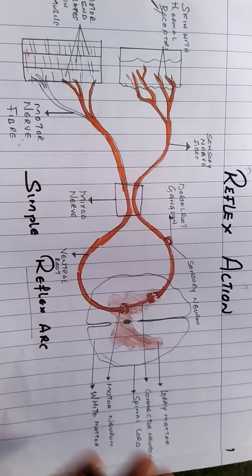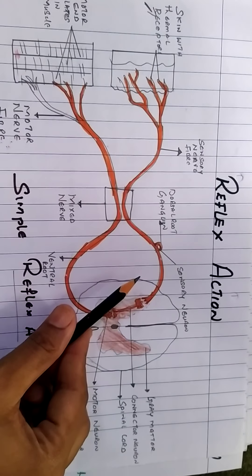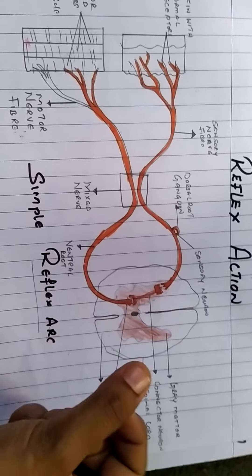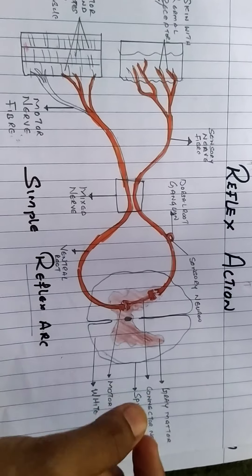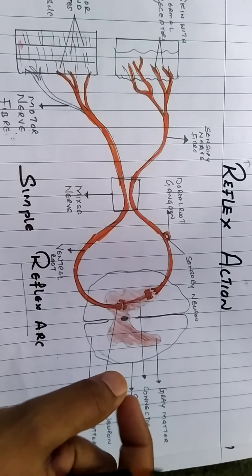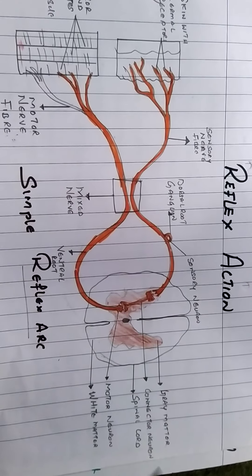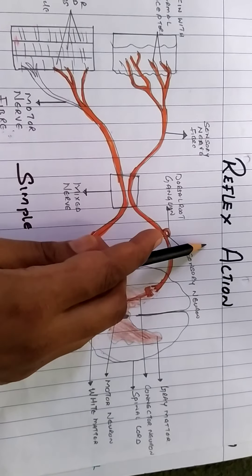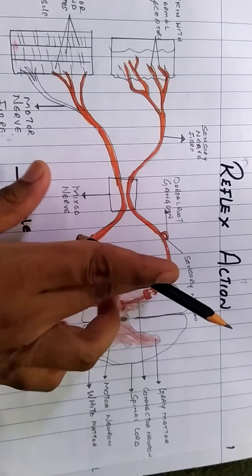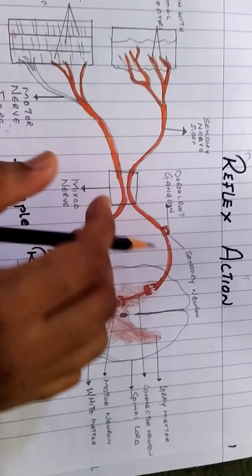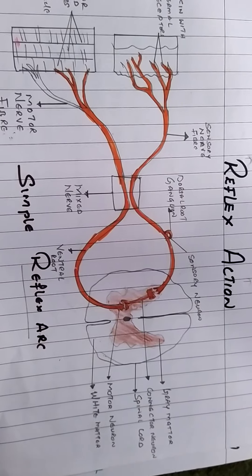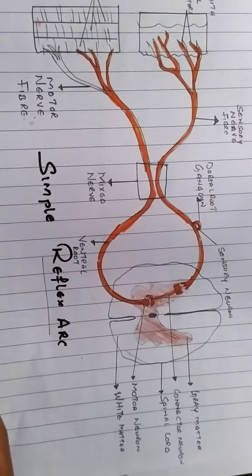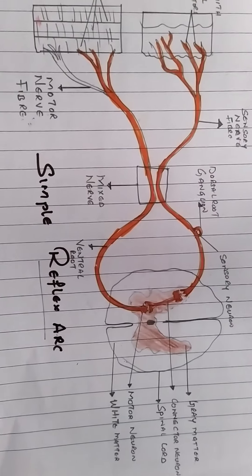What about voluntary action? In voluntary action, the pathway of nerve impulse involves the cerebrum, and the control is in a conscious state of mind under the control of the cerebrum. The response is comparatively slow when compared to reflex action, and the response to the same stimulus may vary — it may even vary with differences in time.